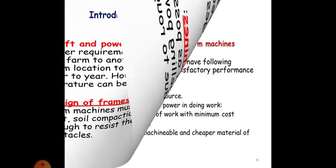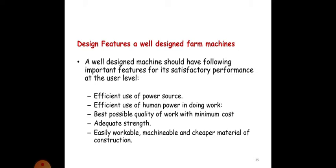Design features of a well-designed farm machine. A well-designed farm machine should have following important features for satisfactory performance at user level. First is efficient use of the power source, efficient use of human power in doing work, best possible quality of work with minimum cost, adequate strength and easily workable, machinable and cheaper material of construction.